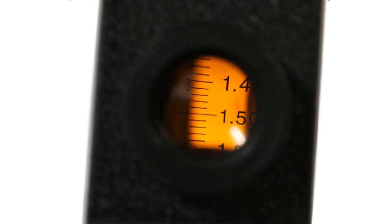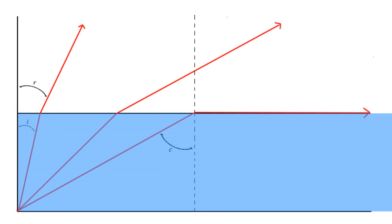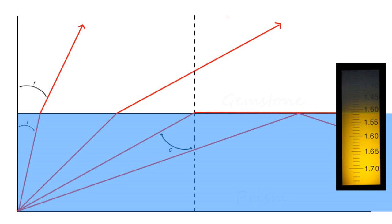So as we look into the eyepiece we can see that part of the reading scale is darker which is the light that has been refracted off into the gemstone and the lit up area is the light that has been reflected. The refractive index is read directly from this scale. The shadow line represents the critical angle between the prism which is a known density and the gemstone being tested which is variable.